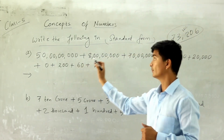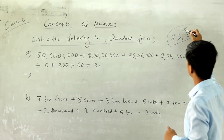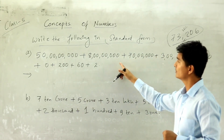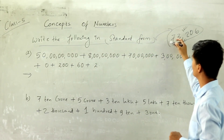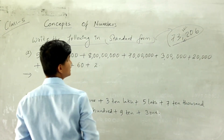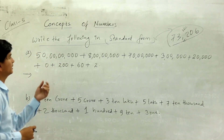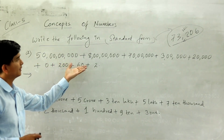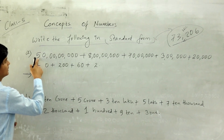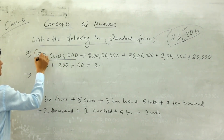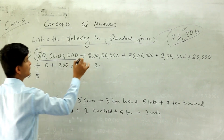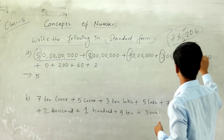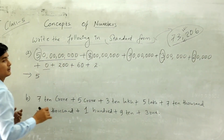So from the expanded form, what you have to do is take out only the digit from each term. From the first term take 5, from the next take 8, then 7, then 3, then 2, and here it is 0 — so simply write 0. Then 2, 6, and 2. We take that digit and place it in order. So: 5, 8, 7, 3, 2, 0, 2, 6, 2. Place one is also taken.